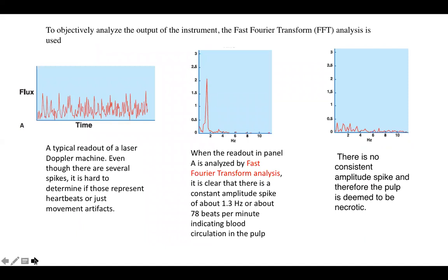To analyze the readout of the instrument, we can use FFT or fast Fourier transform analysis. A typical readout of the laser Doppler machine has several spikes, and we do not know whether these are random spikes or represent heartbeats. When subjected to FFT analysis, we can assess the frequency of these spikes. This analysis shows a frequency of about 1.3 hertz per minute, equivalent to 78 beats per minute, indicating blood circulation within the pulp and hence a vital pulp. In another graph with no consistent spikes, the pulp is deemed to be necrotic.